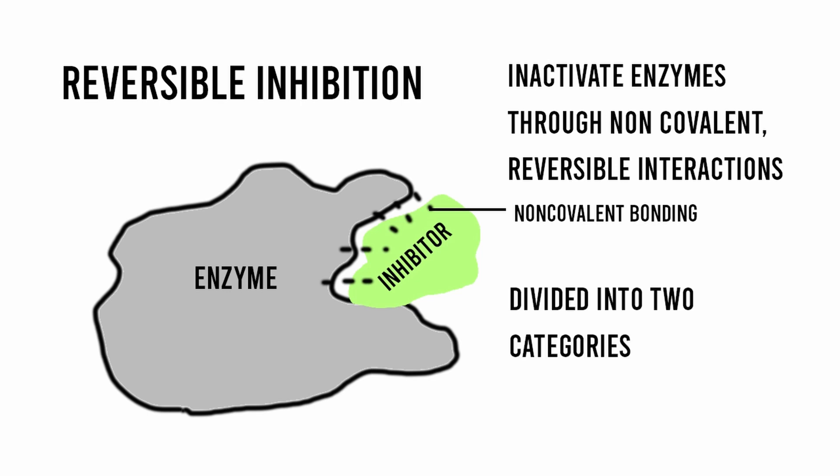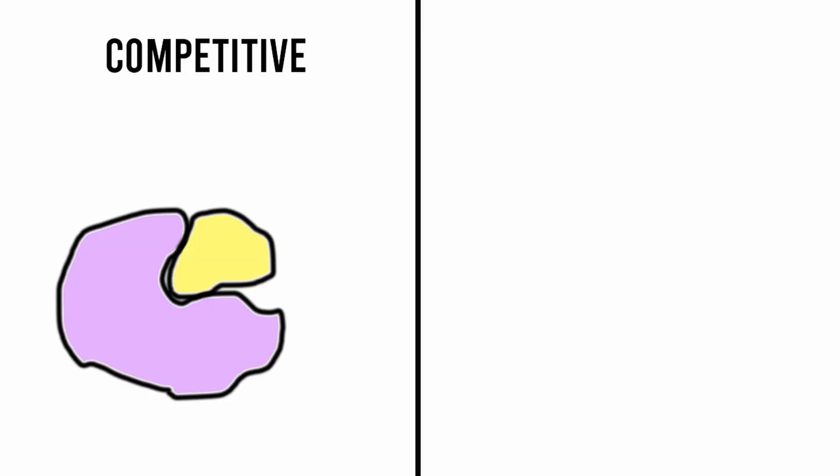Reversible inhibitors are divided into two categories, which we'll be talking about in this video. This includes competitive inhibitors, which bind to the active site, competing against the substrate.